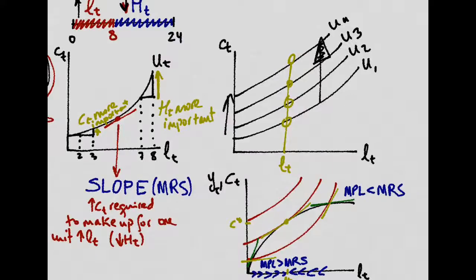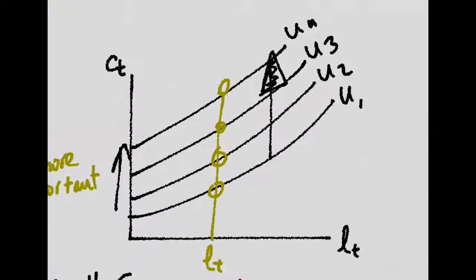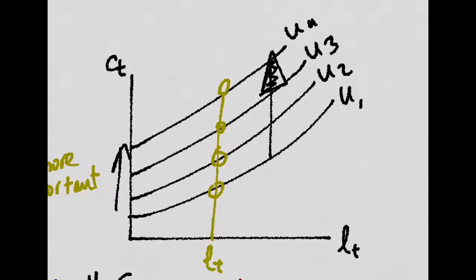So the meaning of the slope of an indifference curve, what we call the MRS, is just the increase in consumption that is required in order to make up for one unit more of work effort, that is, one unit less of leisure. And there are a family of indifference curves.